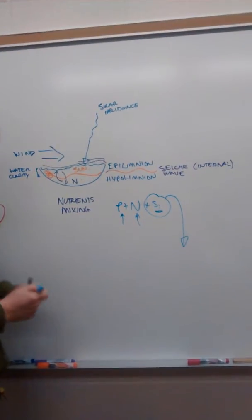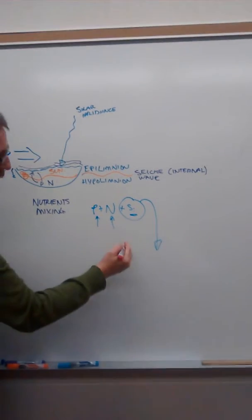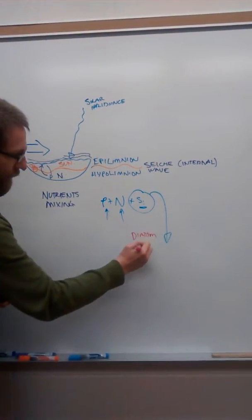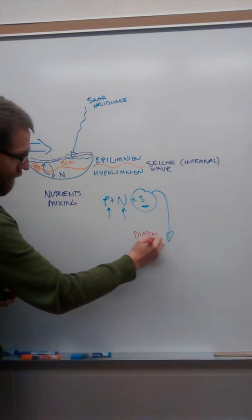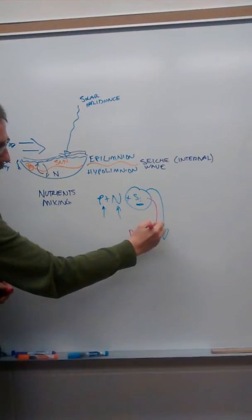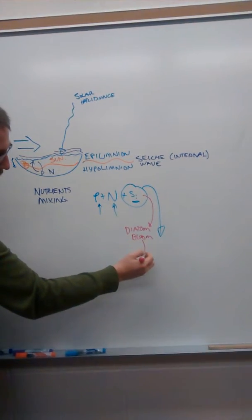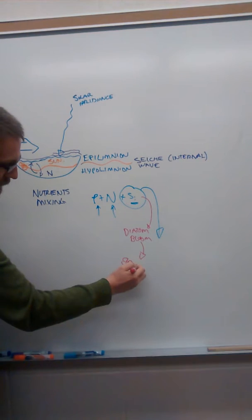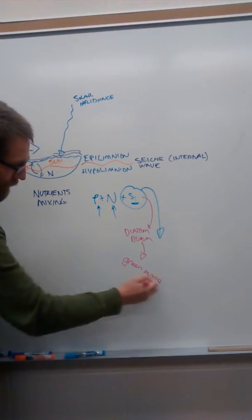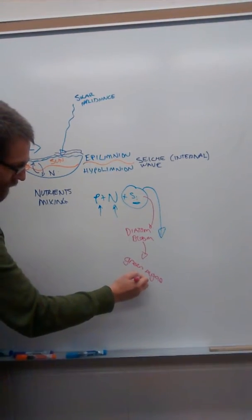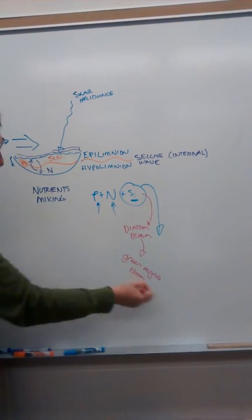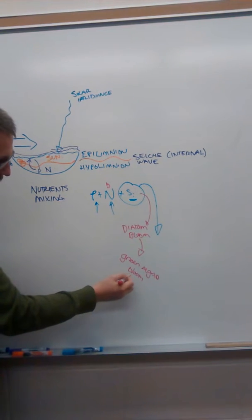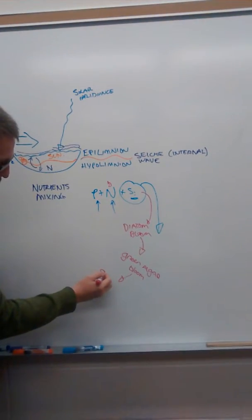And then what will happen is you'll start off with a diatom bloom. Diatoms will eat all of the silica. And then you'll get a green algae bloom. And the green algae will eat most of the nitrogen. And you'll end up with a cyanobacteria bloom.